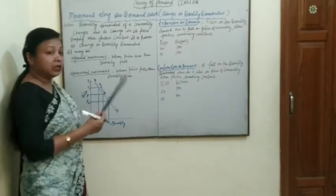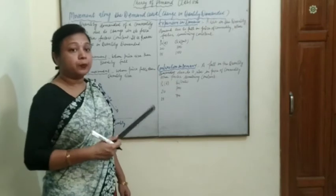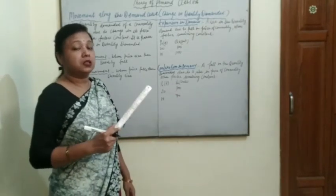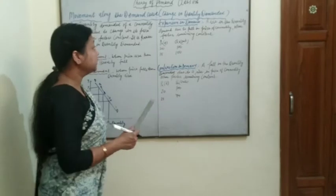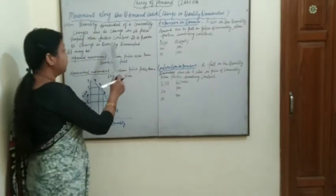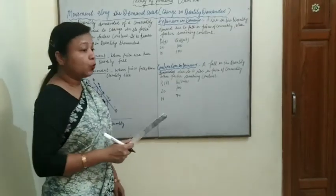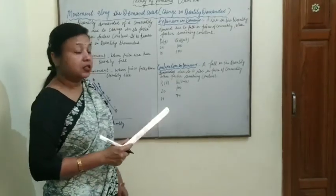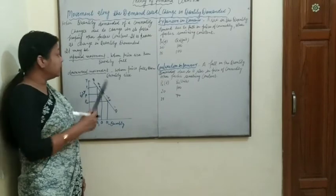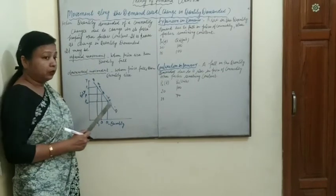Other factors means the price of related goods, income of the consumer, taste, and preference — all these things are constant, and only the own price of a commodity changes. This is known as change in quantity demanded. It may be an upward movement or a downward movement.